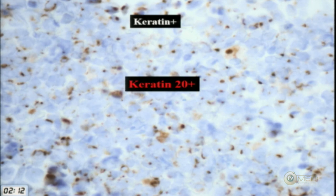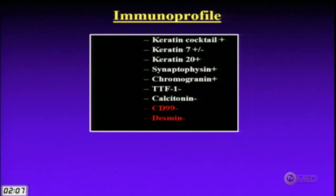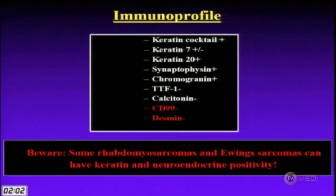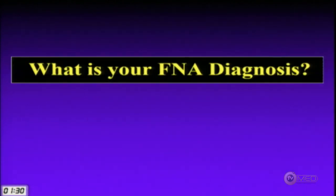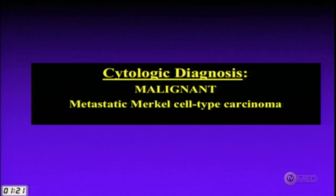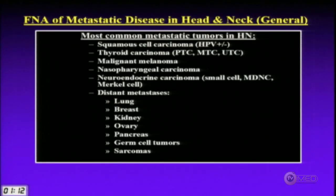Keratin 20 — and it's positive. CD99 and desmin were both negative. A caveat: beware that rare rhabdomyosarcomas and Ewing sarcomas can have keratin and neuroendocrine positivity. When I get something I think is a small-cell cancer in the head and neck in a weird spot, I throw in desmin and CD99 just to be careful. The FNA diagnosis: metastatic Merkel cell carcinoma. The patient had had a Merkel cell carcinoma a year ago on his forehead and now had this neck mass.